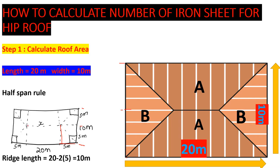Our ridge length is from this point to this point on the plan. We have a total length of 20 meters, but we've taken half the span — 5 meters on each end — so 5 plus 5 is 10, and 20 minus 10 gives us 10. Our ridge length at the top is 10 meters.